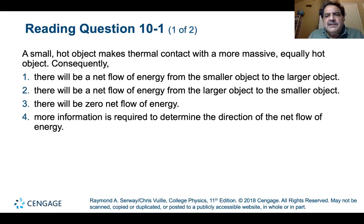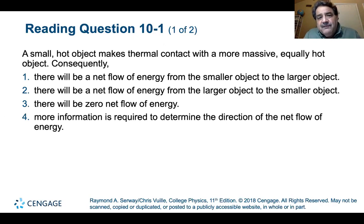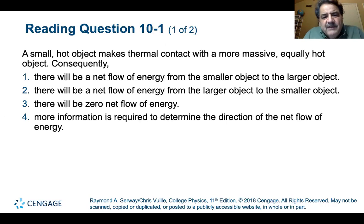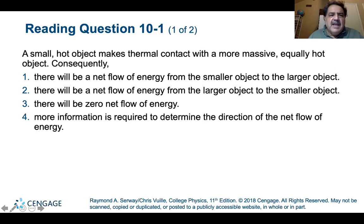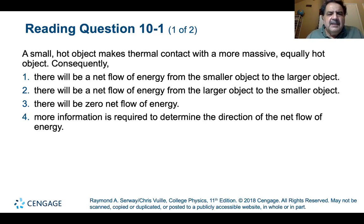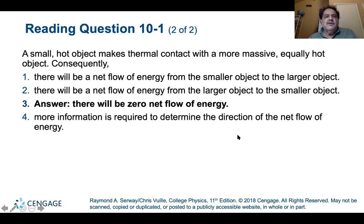Consider: a small hot object makes thermal contact with a more massive object. What will happen? Will there be a net flow of energy from the smaller to the larger, from the larger to the smaller, zero net flow, or does it require more information? The answer: if it's an equally hot object there will be zero net flow — they are in equilibrium with each other. There may be some exchange but the overall net exchange is zero.